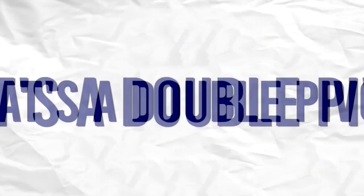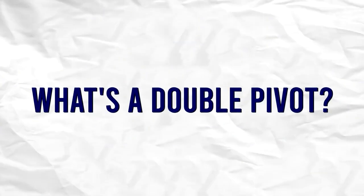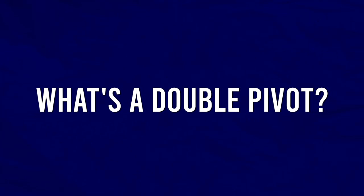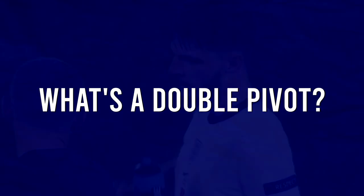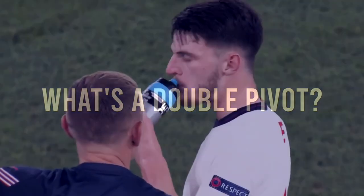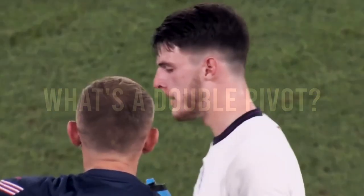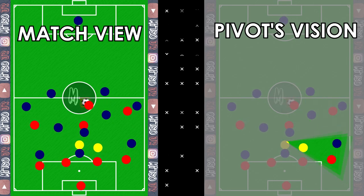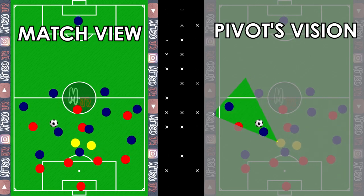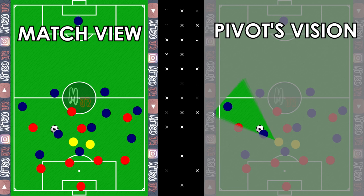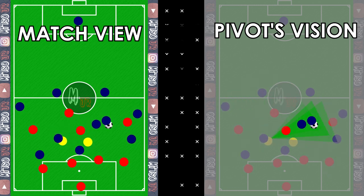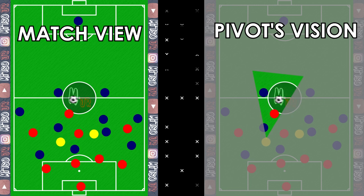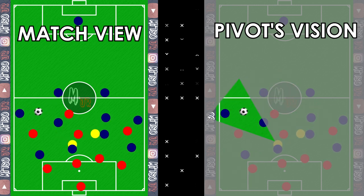To start off, let's understand what is actually meant by a double pivot. A double pivot is simply using two defensive midfielders together on the pitch. The most common formation when a coach likes to use this concept is the 4-2-3-1, where the two in midfield are usually defensive mid players behind the attacking and wide mid players.